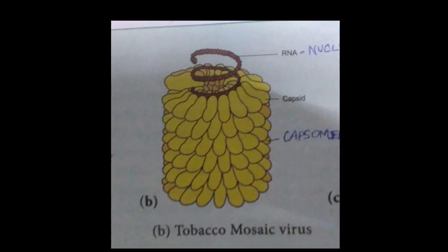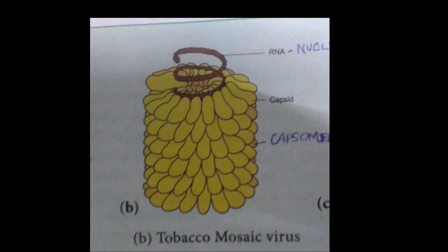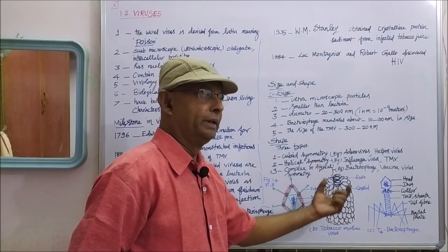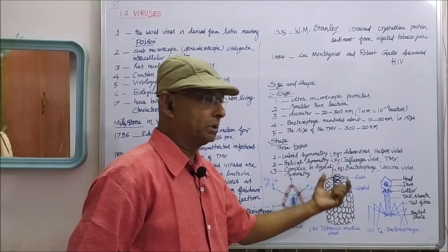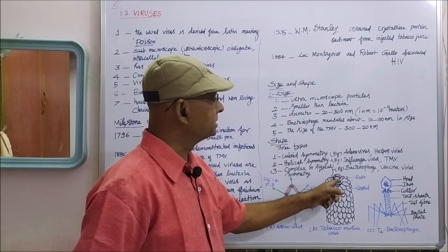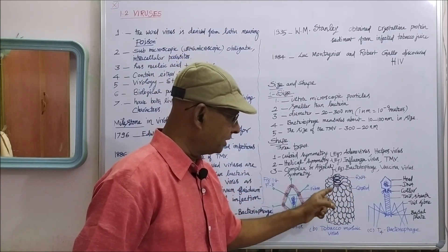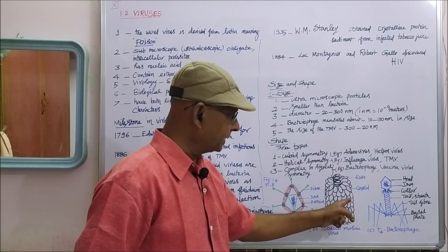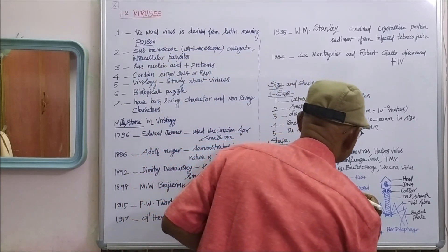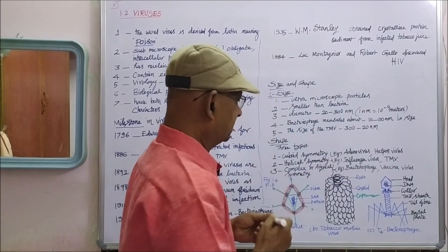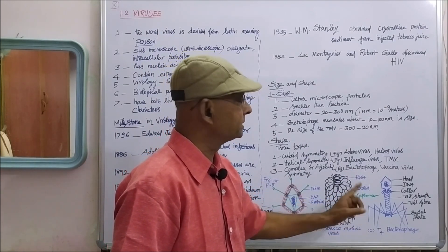Tobacco mosaic virus is a long, elongated, rod-shaped helical virus that contains RNA as the nucleic acid, surrounded by a protein coat called the capsid. The protein coat consists of a number of subunits — each subunit is called a capsomer. All subunits collectively form the capsid.